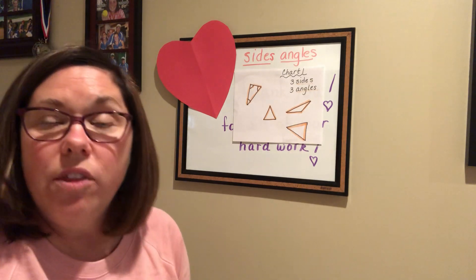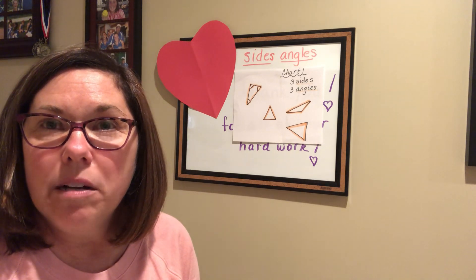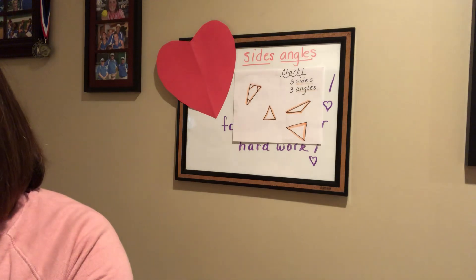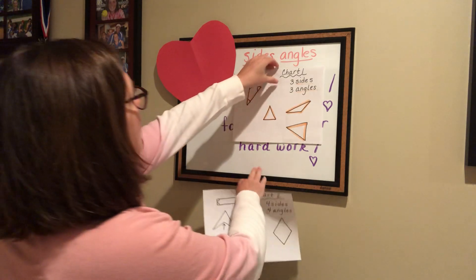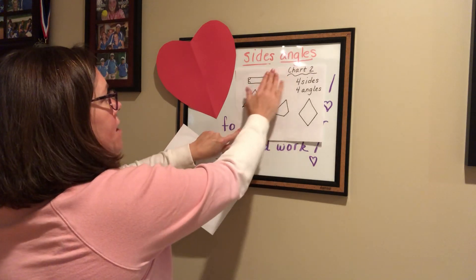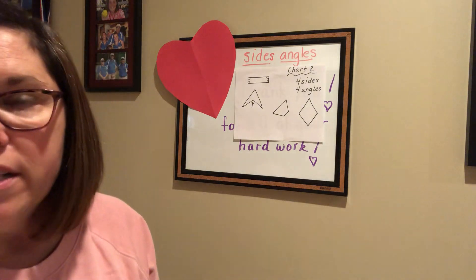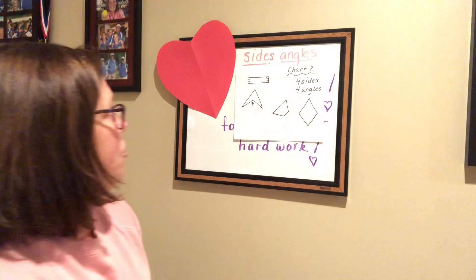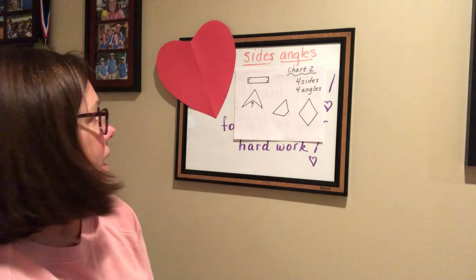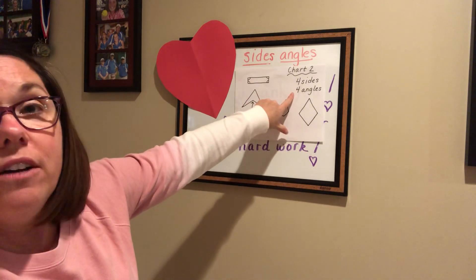Good. And while you do that, I'm going to switch out my chart — I wonder if you can guess what we're going to talk about next. Go ahead, draw yours, and I'm going to fix mine. Are you all done? If not, go ahead and pause if you need to. So we have another chart — it's called Chart 2. And what this one is showing us is that all of these shapes have four sides and four angles.